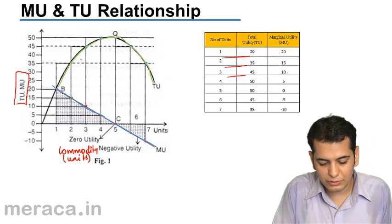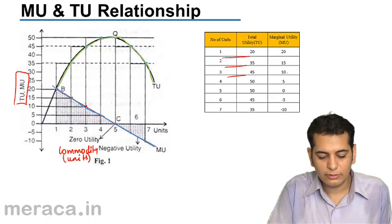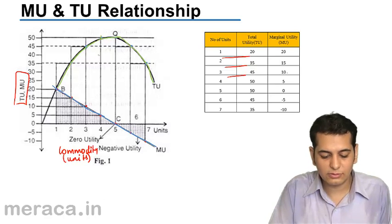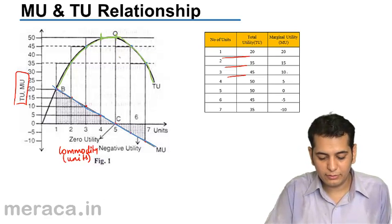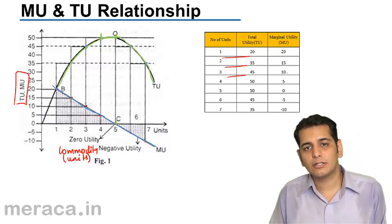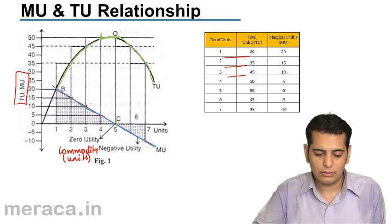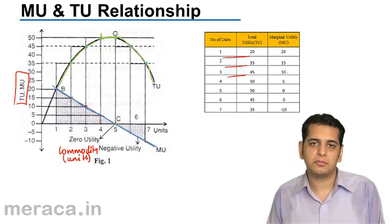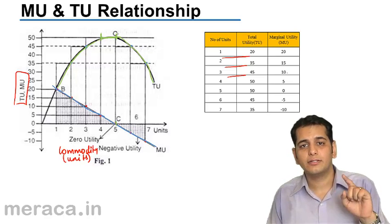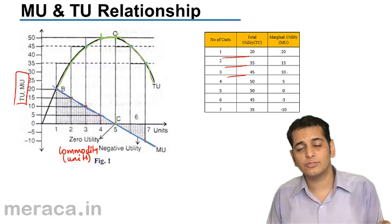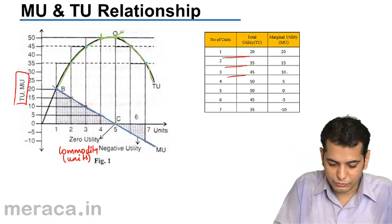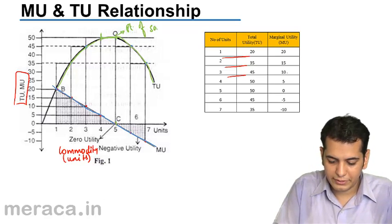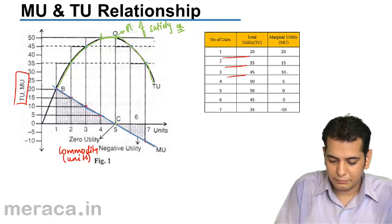However, the total utility curve initially goes on rising. It rises but up to a certain level. After that level, it becomes constant. And when the marginal utility cuts the x-axis, that is the marginal utility is 0, the total utility is maximum. The total utility at the point where the marginal utility curve cuts the x-axis, that is the marginal utility is 0, there the total utility will be maximum and that point is known as the point of satiety or the point of maximum satisfaction.